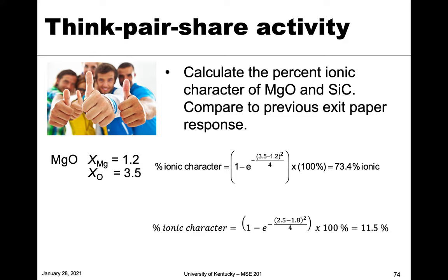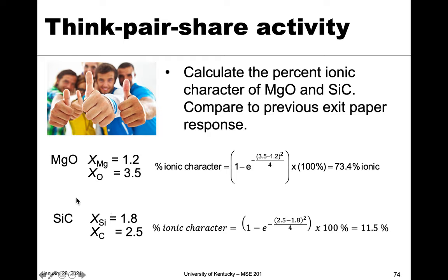Magnesium oxide, like sodium chloride, is very ionic — you can see that because the electronegativity numbers are quite different. Comparing it to silicon carbide, the values are 1.8 and 2.5 — much closer together — so you'd expect the ionic character to be much lower. Plugging that in, we get 11.5% ionic, so SiC is considered a more covalent material. Even so, MgO still has some covalent character, and SiC still has some ionic character.